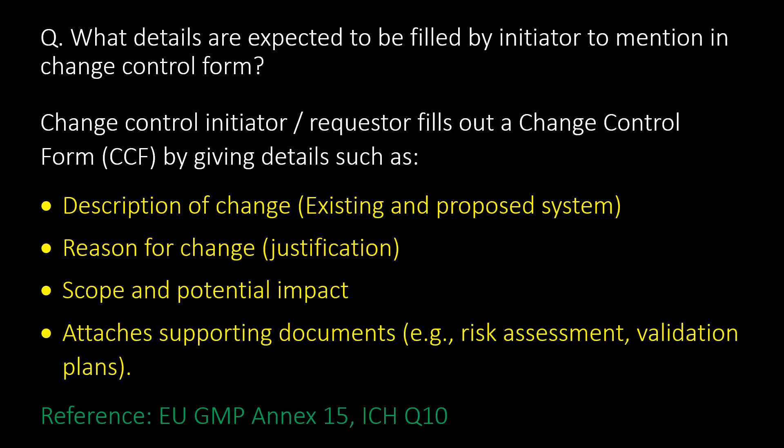What details are expected to be filled by the initiator in the change control form? The change control initiator fills out a change control form (CCF) providing details such as description of change, existing and proposed system, reason for change including justification, scope, and potential impact. Supporting documents such as risk assessment and validation plans are attached. Reference: EU GMP Annexure 15, ICH Q10.